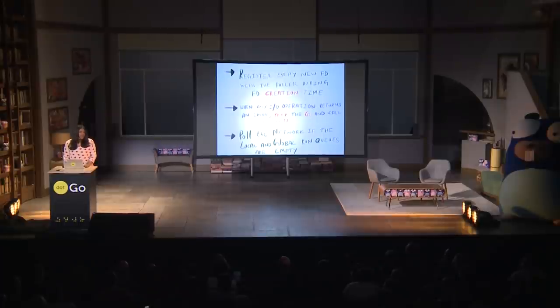If any of this seems exciting or interesting, I would highly recommend reading the Go source code — especially the net and runtime packages. It is an astonishingly approachable source code, extremely well commented and well explained. There are many details I had to gloss over simply because of time, but I would highly recommend anyone who wants to know more about these concepts and how Go works with primitives built on top of the operating system to go check out the source code. Thank you.